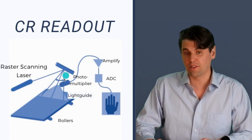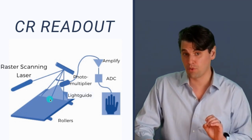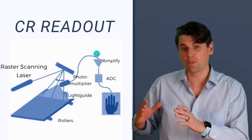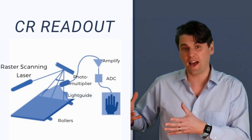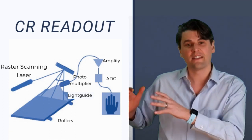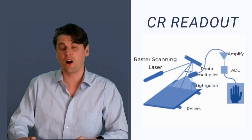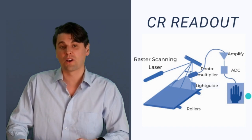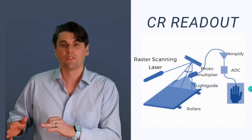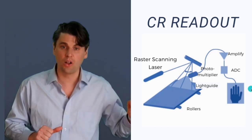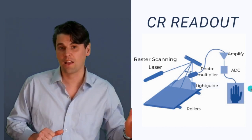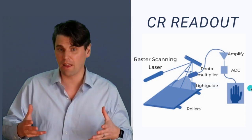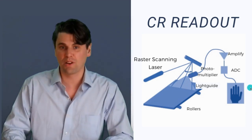That way we're going to fill up our whole image matrix one line at a time. The laser is going to free the light, that light is going to go through a light guide, then through a photomultiplier tube where the signal is amplified — it's still what's called an analog signal at that point. Then it's going to be digitized in a circuit we call an analog-to-digital converter, where we're essentially converting to a number. We start out with a latent image proportional to the exposure the panel saw, and what we get out is that number — and that's how we build up a digital image using computed radiography.